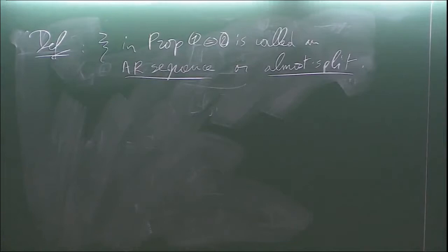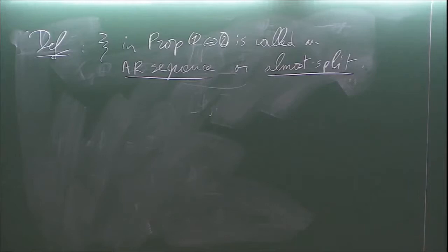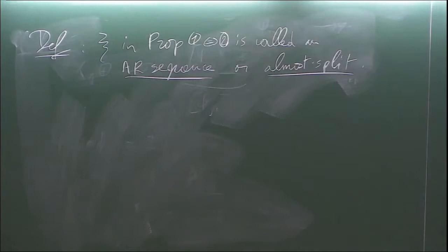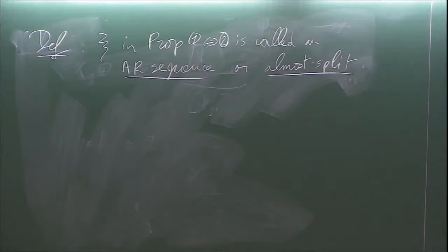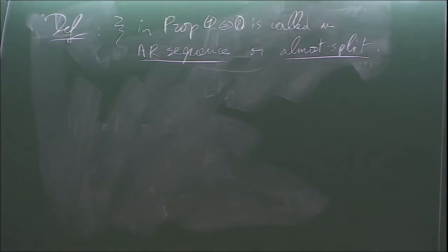Why 'almost split'? A split sequence is one where the middle term is the direct sum of the outer terms. For a split sequence you can remove any split epimorphism — so it's almost split in the sense that it's split except for a very small class of morphisms. It's the closest possible to split. Another way to say it: xi composed with F equals zero for any non-trivial F. An Auslander-Reiten sequence — you cannot get intuition from the name except that it was invented by Auslander and Reiten.